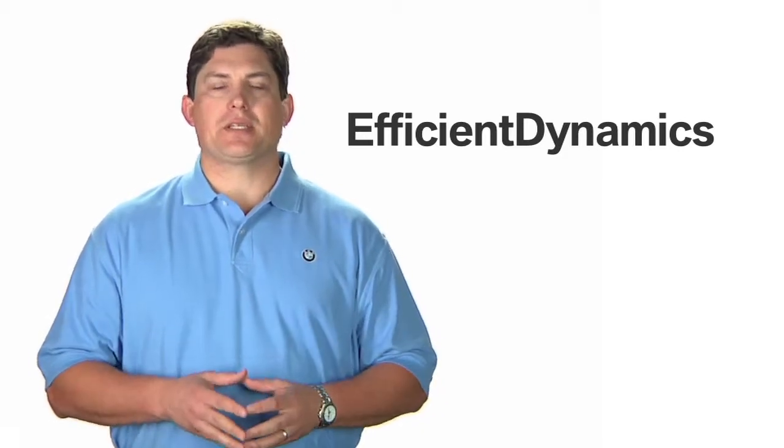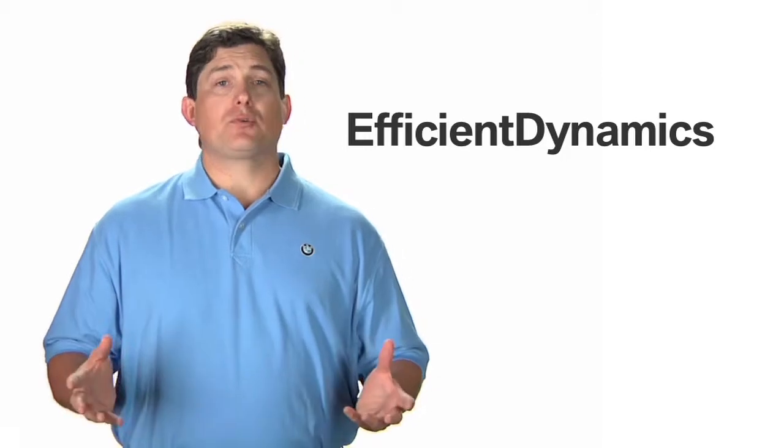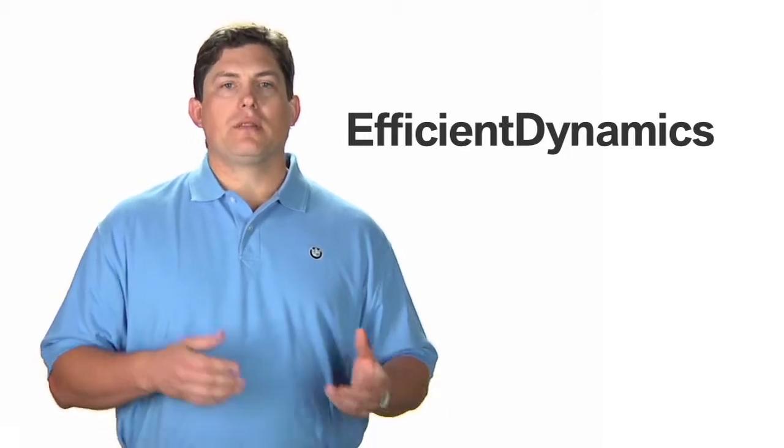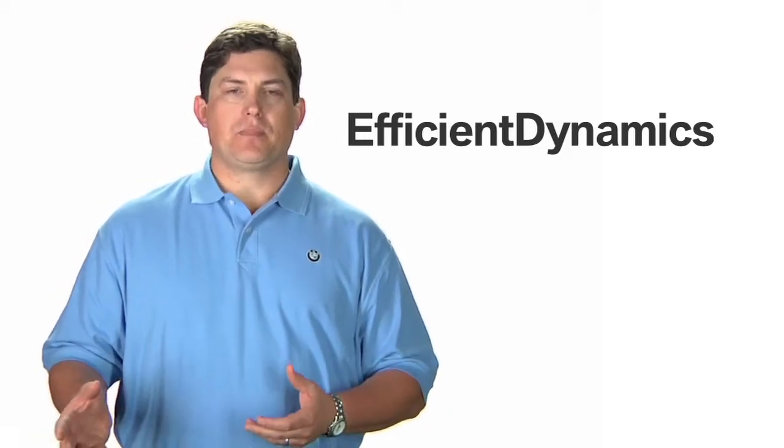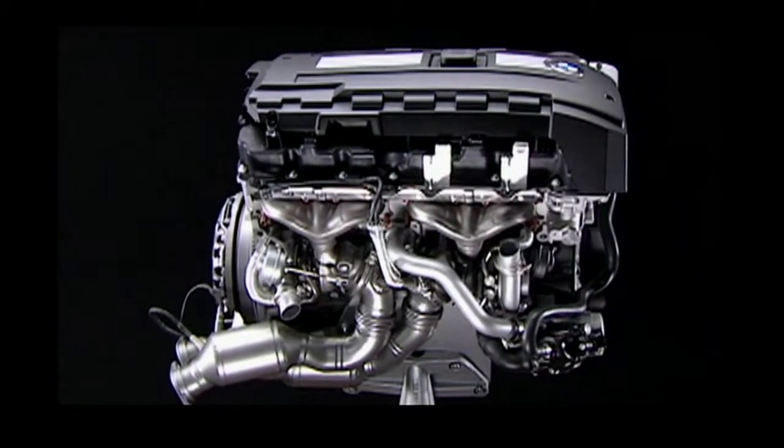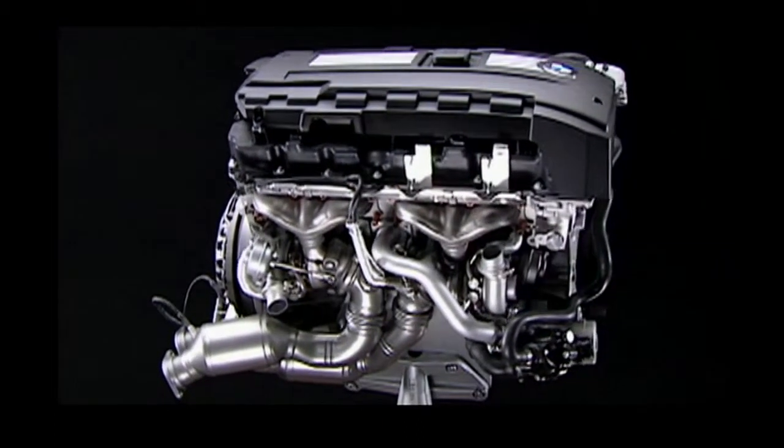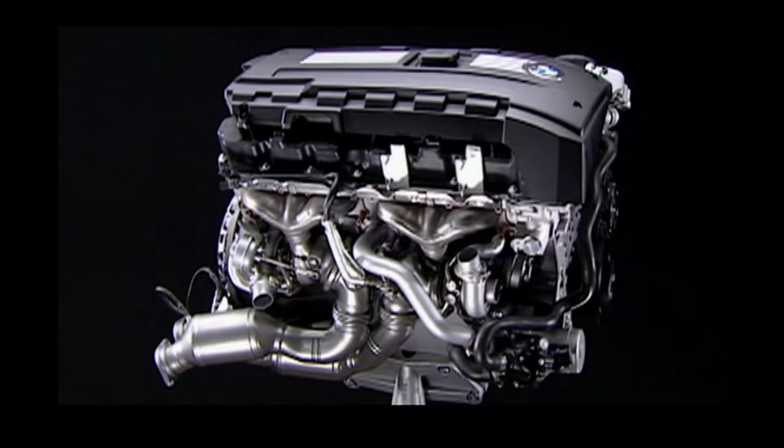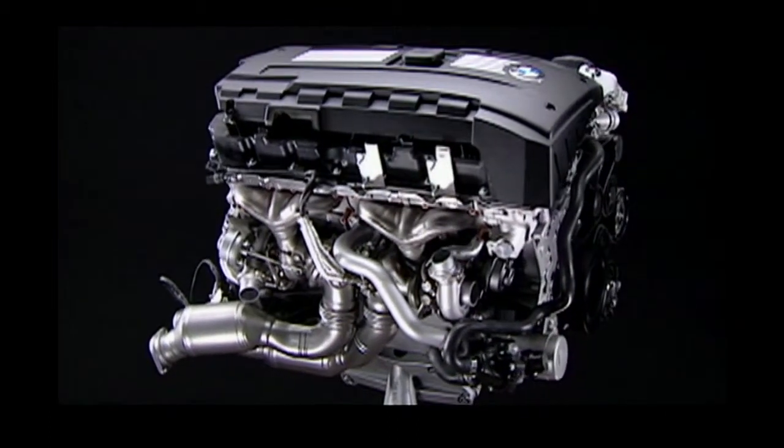One facet of Efficient Dynamics is lightweight design. After all, the lighter the vehicle, the less power needed to move it. You see, each BMW model benefits from the liberal use of lightweight aluminum throughout the engine, chassis, suspension, and braking systems.